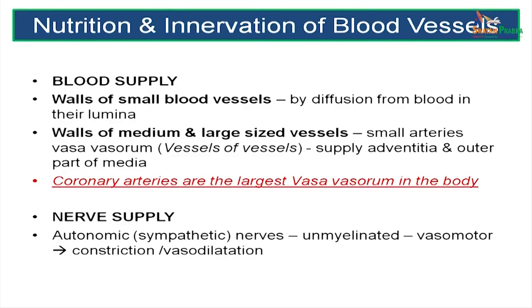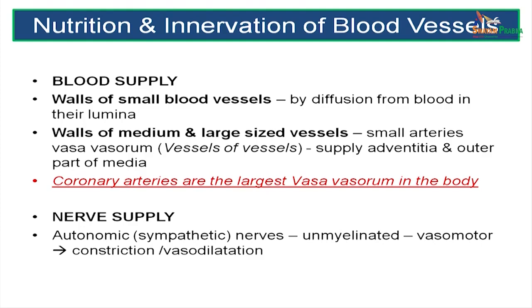The inner layers of a blood vessel get nutrition through diffusion through the layers. The internal elastic lamina is also of a fenestrated type, allowing diffusion of nutrients and oxygen through the walls to supply the inner layers of the vessel wall. In larger vessels with thicker walls, the outer half is supplied by the vasa vasorum — vessels within vessels. The largest vasa vasorum of the body are the coronary arteries. The nerve supply of blood vessels is autonomic, with unmyelinated nerve fibers causing vasoconstriction or vasodilatation as required.